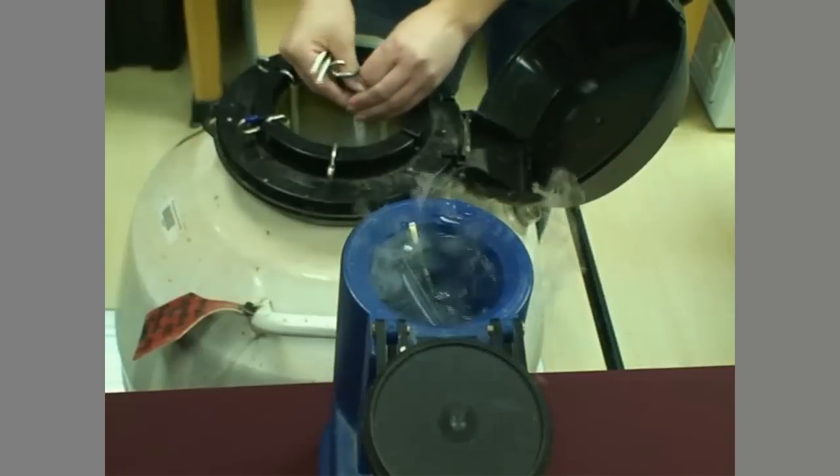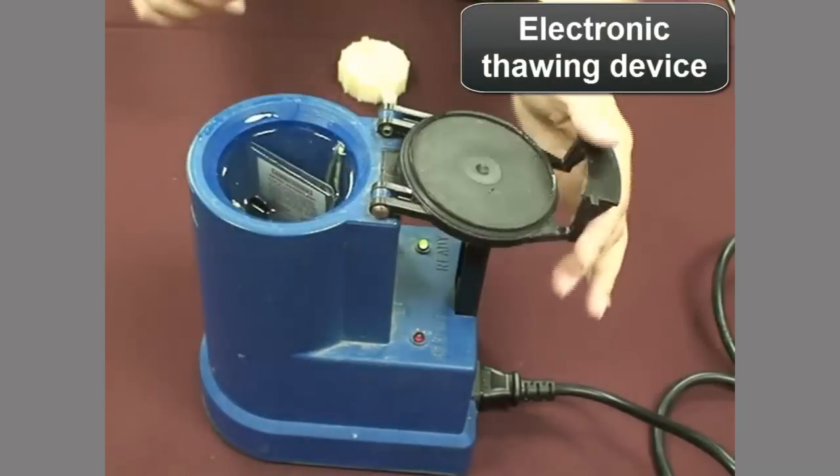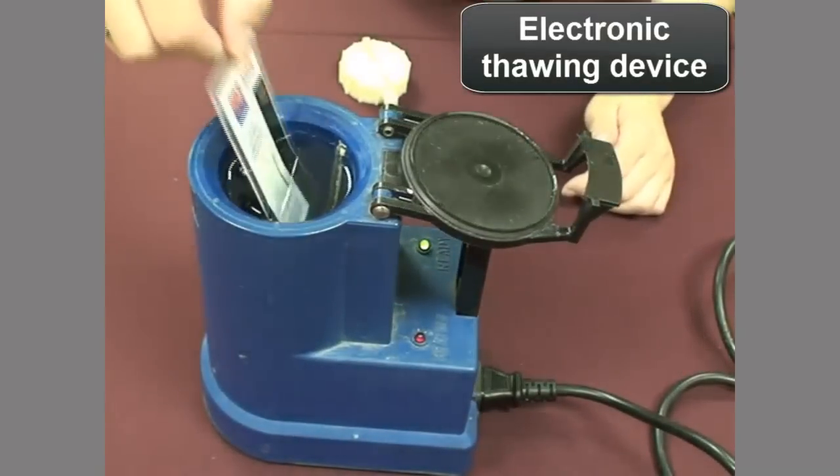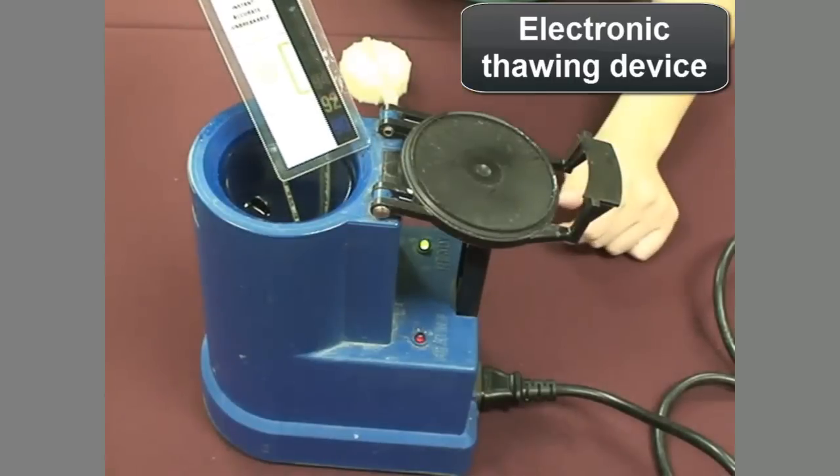Electronic thawing devices are convenient to use. An electricity source at the site of semen handling is needed for these units. When functioning properly, these devices keep the water temperature between 95 and 98 degrees Fahrenheit.